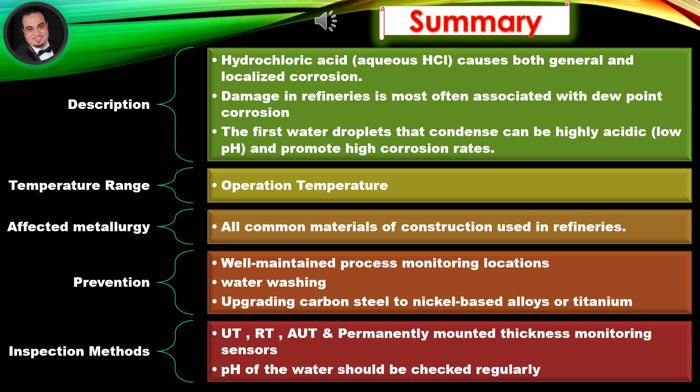Temperature range: operation temperature. Affected metallurgy: all common materials of construction used in refineries. Prevention: well-maintained process monitoring locations, water washing, and upgrading carbon steel to nickel-based alloys or titanium. Inspection methods: UT, RT, AUT, and permanently mounted thickness monitoring sensors. pH of the water should be checked regularly.